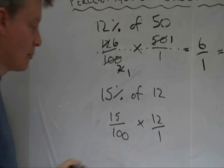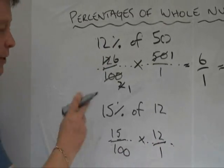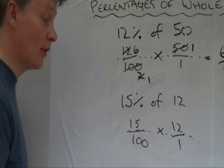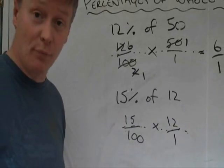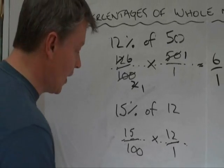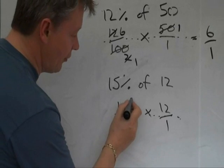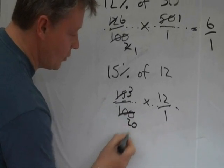And just the same as before, imagine that line continues across there. Whatever we do to the top, we've got to do to the bottom as well. So, I know 15 and 100. If I divide both of them by 5, I can make the numbers a little bit smaller. So, 15 divided by 5 is 3, 100 divided by 5 is 20.